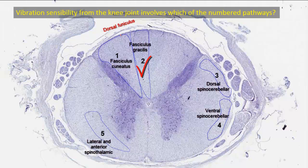As we go upwards in the spinal cord — at an upper thoracic level — fibers are added to the lateral side to form fasciculus cuneatus, while fasciculus gracilis, which originally carries sensations from the lower limb, remains on the medial side. Thus, the vibration sense from the knee joint will be present in fasciculus gracilis, number two.